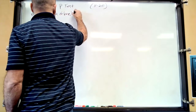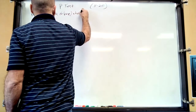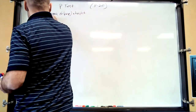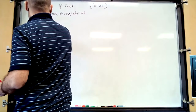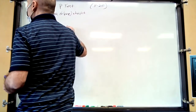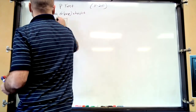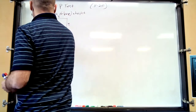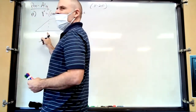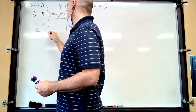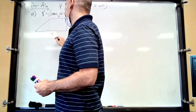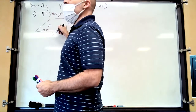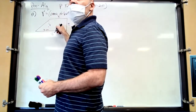Unless you remember the area of a trapezoid, let's just break it up. This is a 4 by 5 rectangle, and then what are the dimensions of the triangle? This whole thing is 8. The triangle is 3 by 4.